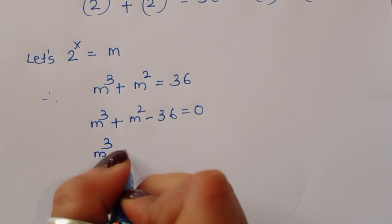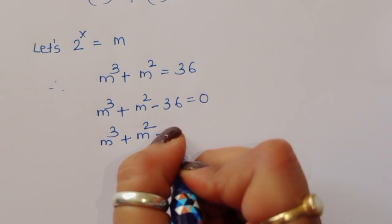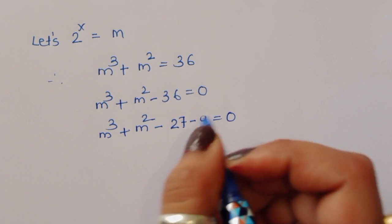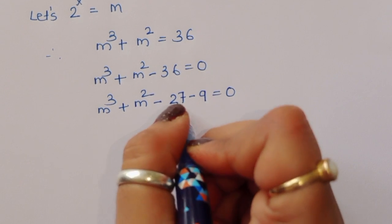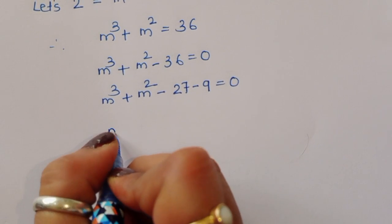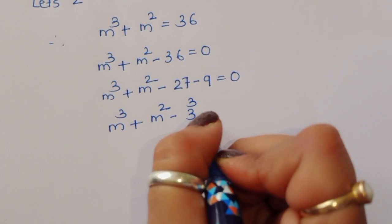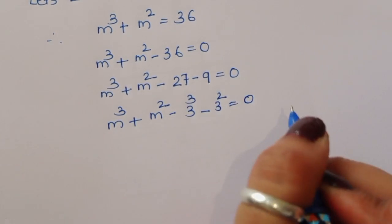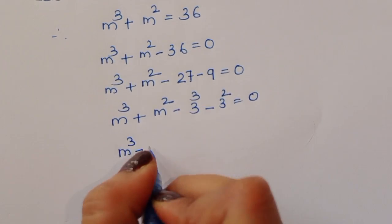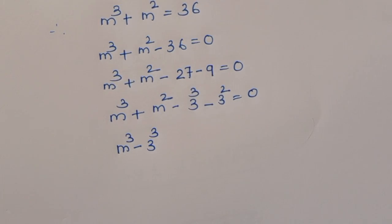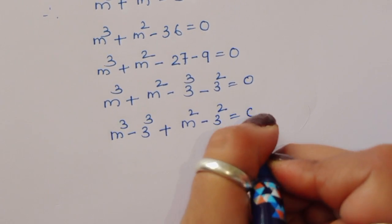We split -36 as -27 - 9. Since 3³ = 27 and 3² = 9, we can write m³ + m² - 3³ - 3² = 0. Rearranging: m³ - 3³ + m² - 3² = 0.